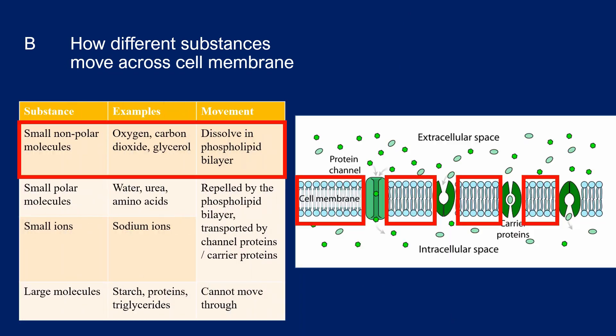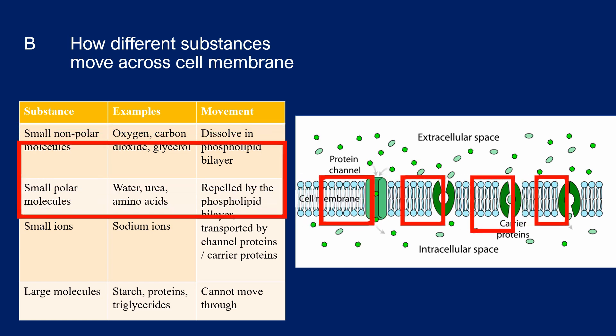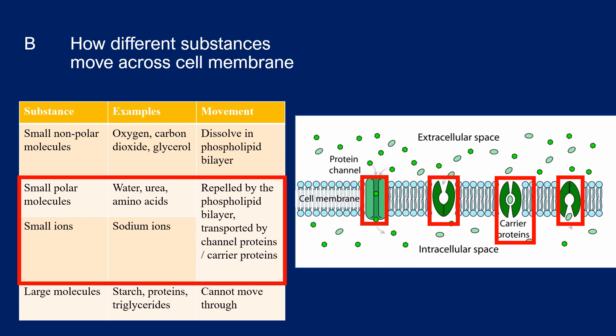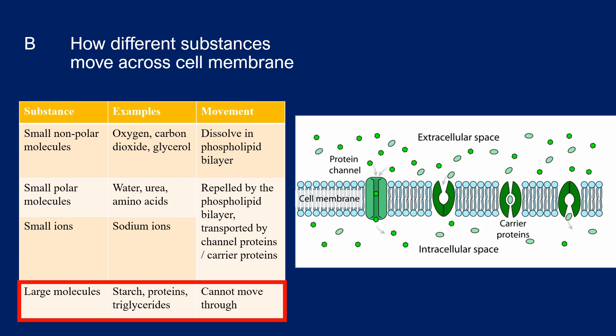Small non-polar molecules like oxygen, carbon dioxide, and glycerol will move by dissolving in the phospholipid bilayer. Small polar molecules like water, urea, and amino acids will be repelled by the phospholipid bilayer, so they are transported by carrier proteins, except water. Small ions like sodium ions and also water will be transported by channel proteins. Large molecules cannot move through the cell membrane.